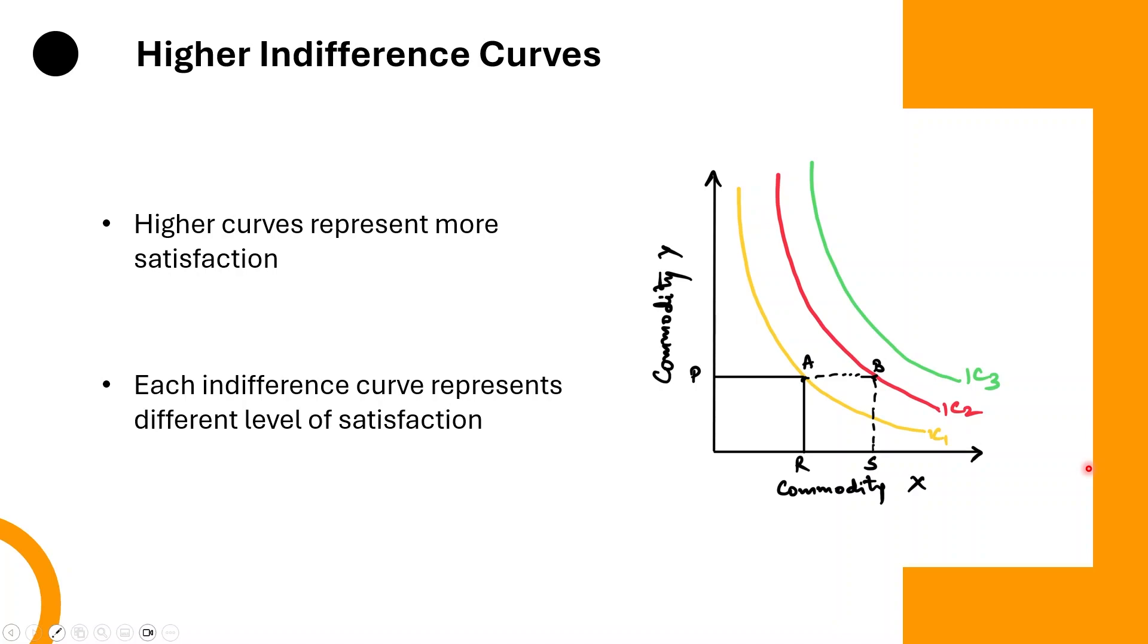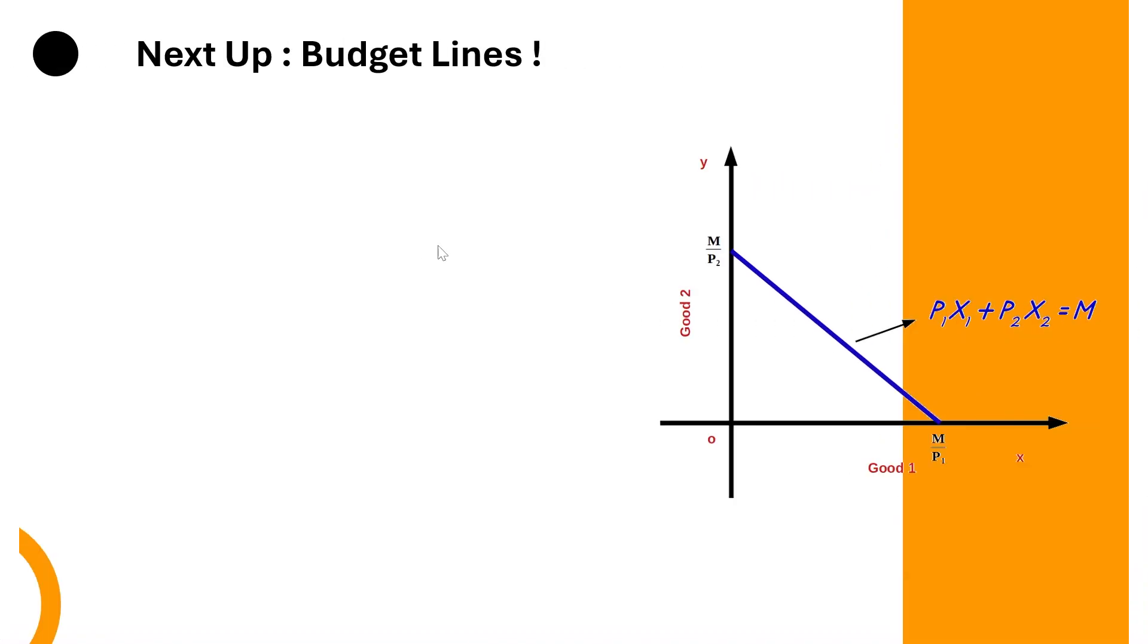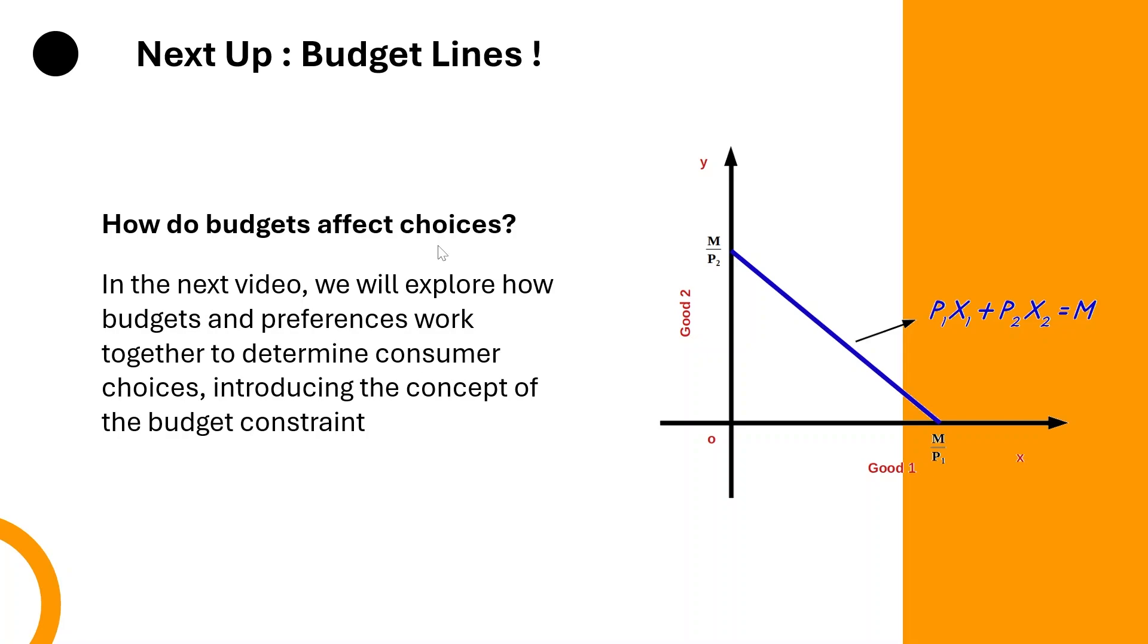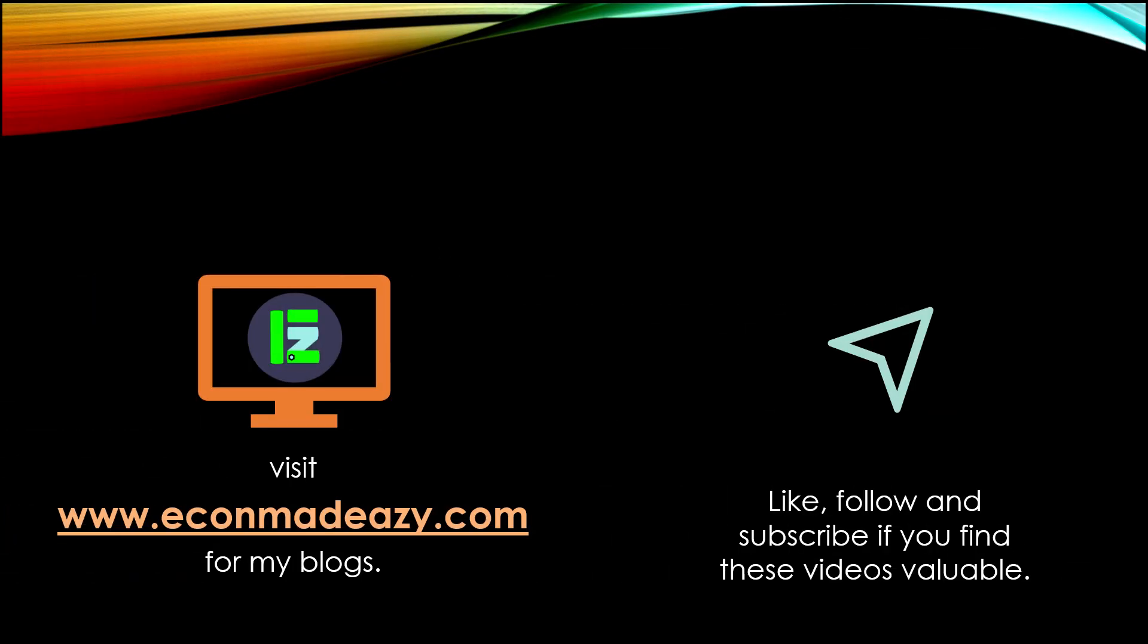So that's the magic of indifference curves. They help us understand how people make choices that balance their preferences. But as we all know, we don't have unlimited resources, and that's where the budget line comes in, and we will cover that in the next video. Make sure to subscribe, hit the bell, and drop a comment if you found this helpful. Bye.